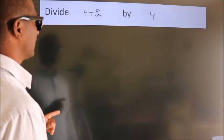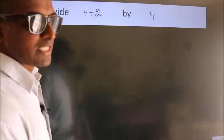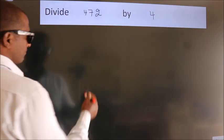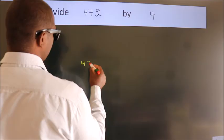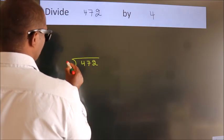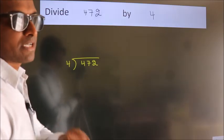Divide 472 by 4. To do this division, we should frame it in this way. 472 here, 4 here. This is your step 1.